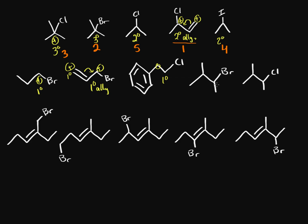This bromine is simply secondary, forming a secondary cation, and this chlorine is also purely secondary. To rank: the allylic one is number one — most stable. There are no tertiary cations. Among the two secondary cations, bromine is a better leaving group than chlorine, so that's number two. Among the two primary cations, bromine is again a more stable leaving group, so that primary bromine is more reactive in SN1 than the primary chlorine.